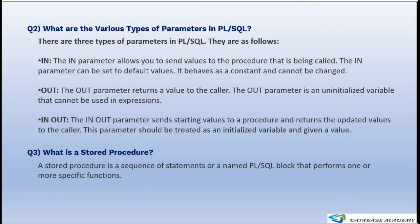The next question an interviewer can ask is: what are the various types of parameters used in functions or procedures? The IN parameter allows you to send a value to a procedure — it behaves as a constant and cannot be changed, and can be set to a default value. The OUT parameter is used when returning a value. The IN OUT parameter is used when a single parameter both accepts and returns a value.